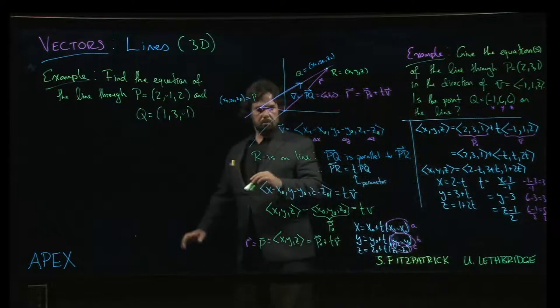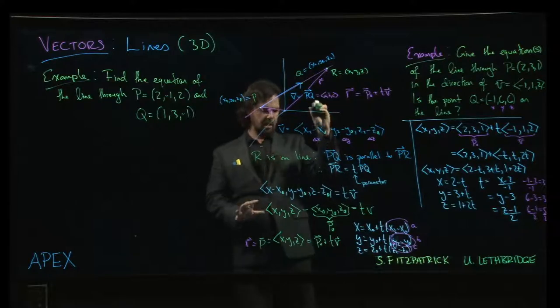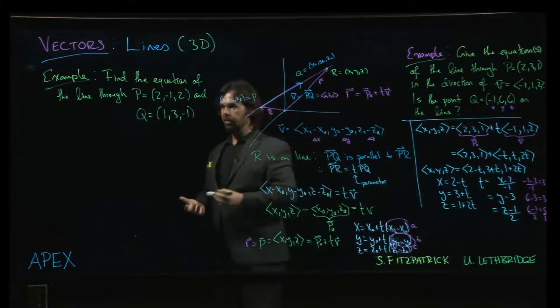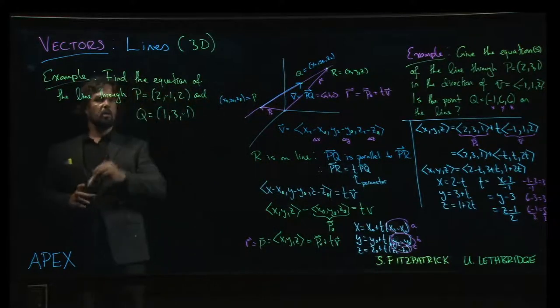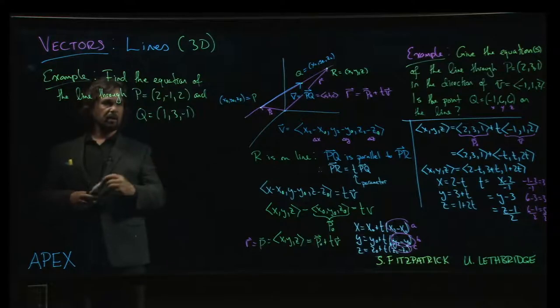So the next example is similar to the setup that we used to derive the equation of a line. In the first place, we're given two points. We want to find the equation of a line that goes through those two points.